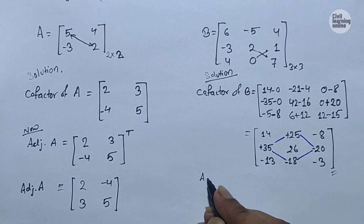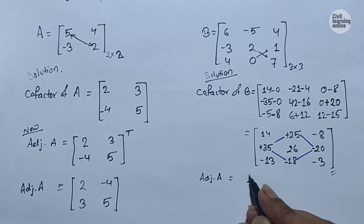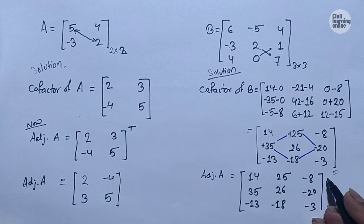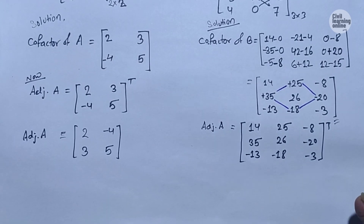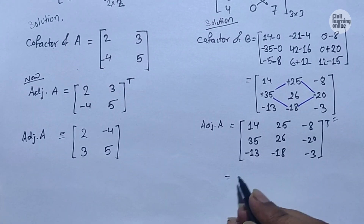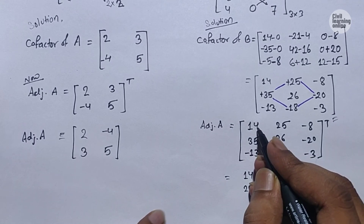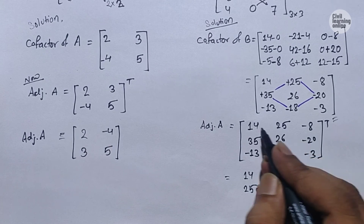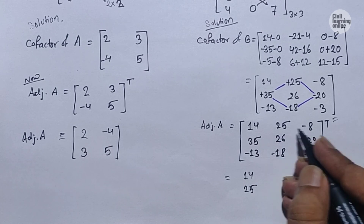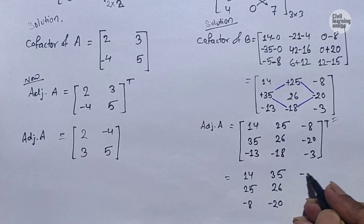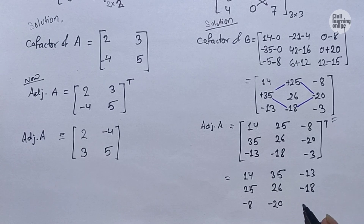Now we calculate the adjoint of B. Taking the transpose of the cofactor matrix [14, 35, -13 / 25, 26, -18 / -8, -20, -3], we swap rows and columns. So the adjoint of B equals: [14, 25, -8 / 35, 26, -20 / -13, -18, -3]. This is the adjoint of matrix B.